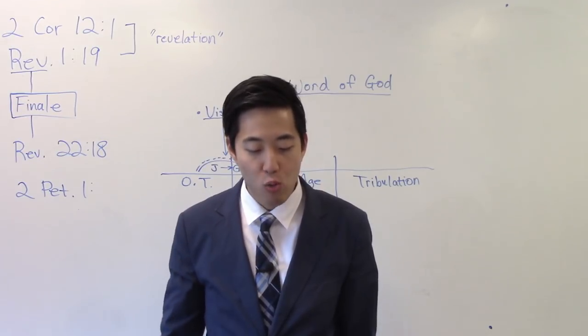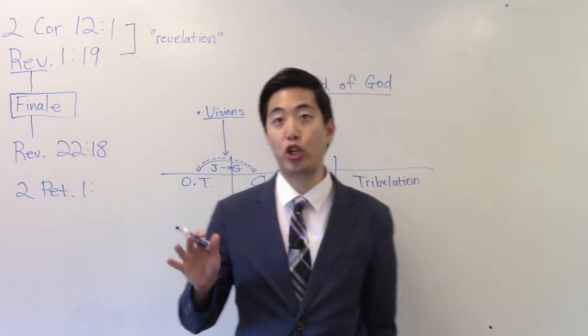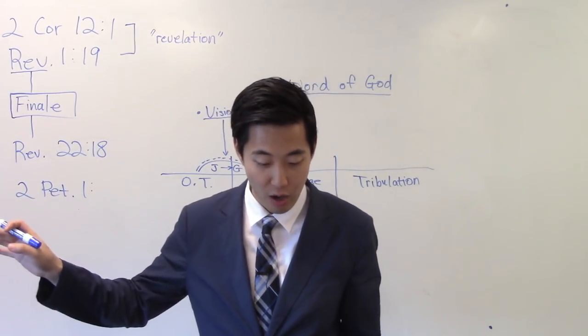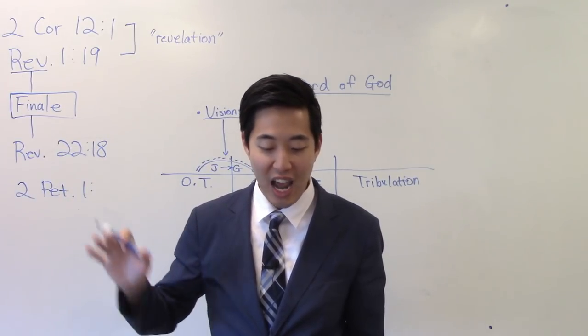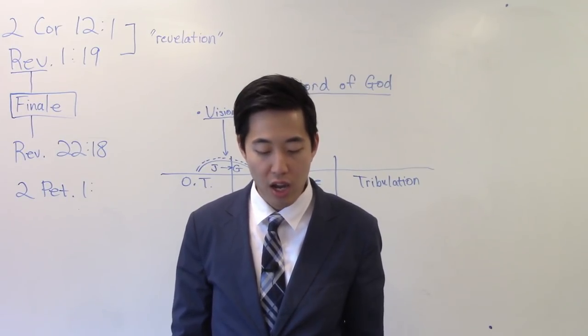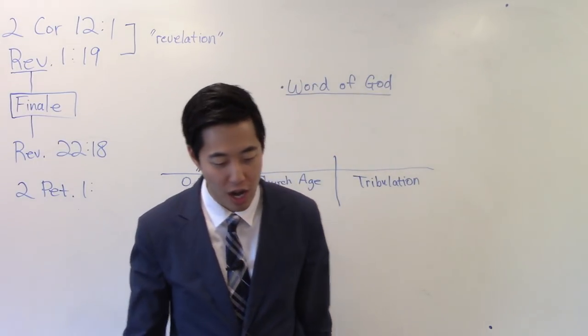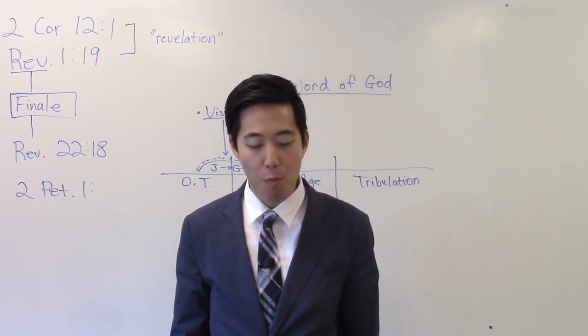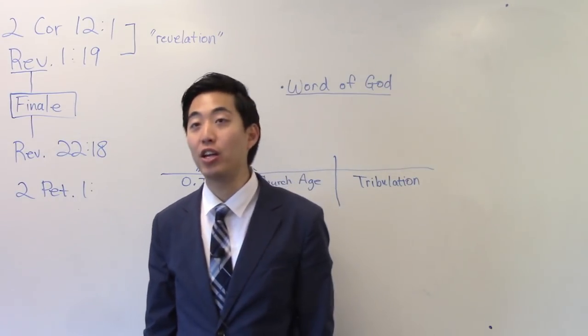And yet, what did the Bible say? Verse 19. We have also a what? More sure word of prophecy. This is more sure than God directly speaking at you, revealing himself right in front of your face. Let's keep reading. Notice the word of God says, Whereunto ye do well that ye take heed, as unto a light that shineth in a dark place, until the day dawn, and the day star arise in your hearts. What is that more sure word of prophecy you got? It says colon. Knowing this first, that no prophecy of the scripture is of what? Any private interpretation. It's the scriptures.